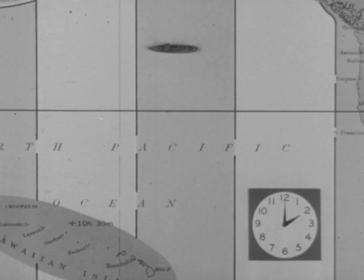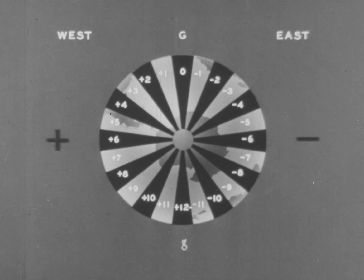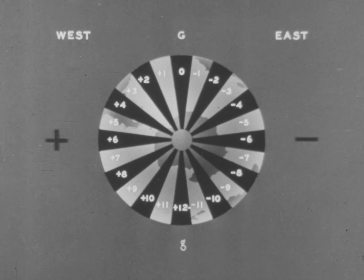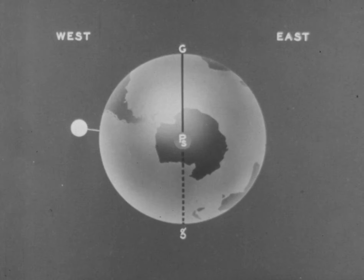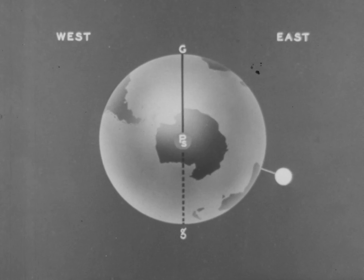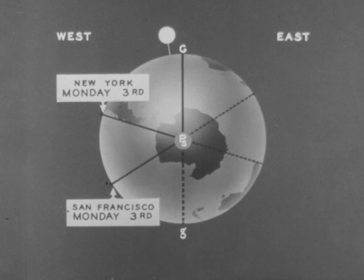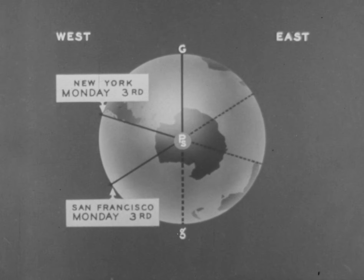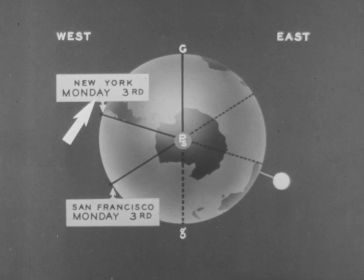Remember that zone time plus or minus zone description will give Greenwich civil time. Now let us consider the matter of a new day in relation to the date. As one day ends and another commences at midnight — at the lower transit of the mean sun for any position on the earth — it is evident that a new day is always commencing somewhere in the world.